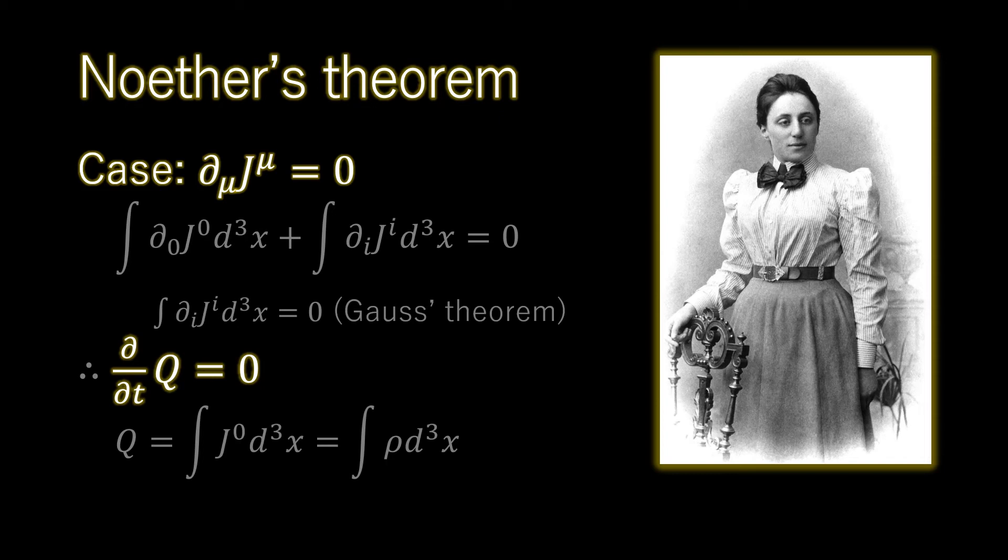Consider the case partial derivative of J mu equals zero. The charge Q does not change with time. Whenever there is a conserved current, there is also a conserved charge, and vice versa.